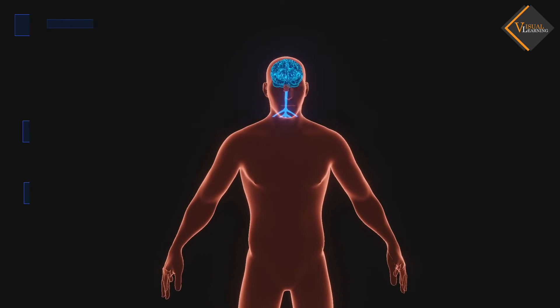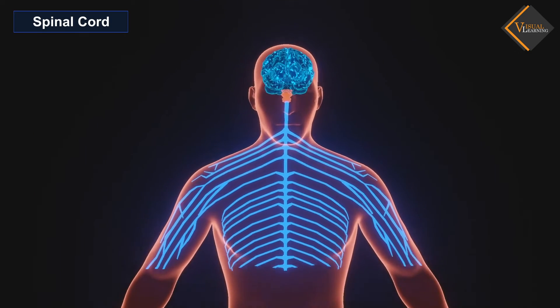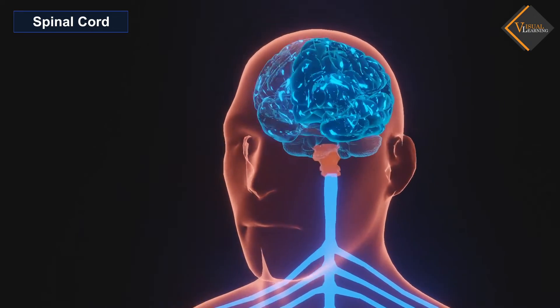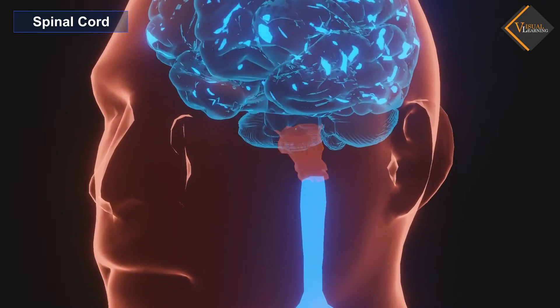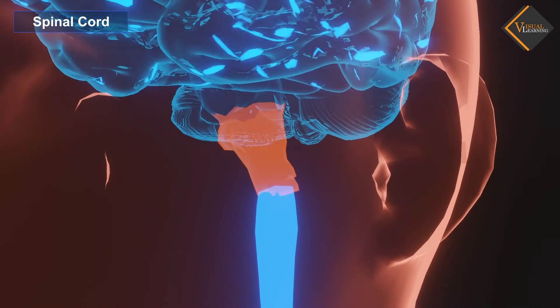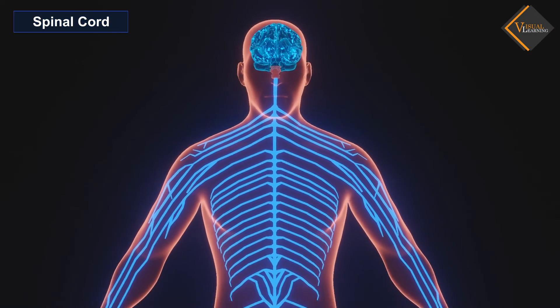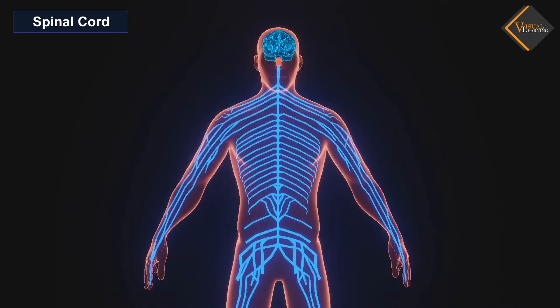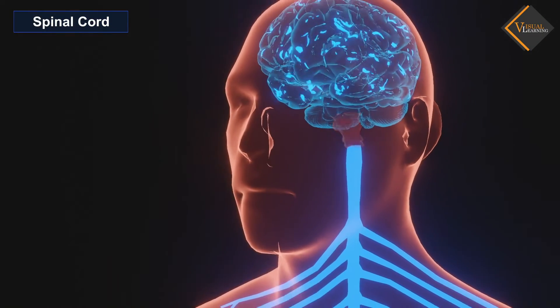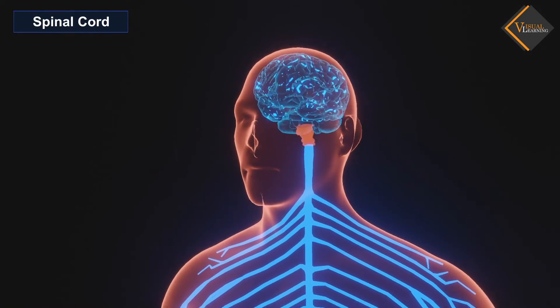The spinal cord is a cylindrical bundle of nerve fibers and associated tissues enclosed within the spine, connecting all parts of the body to the brain. It begins in continuation with the medulla and extends downward.